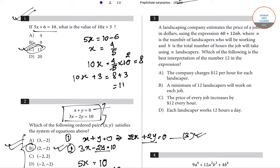Coming to question number 3: a landscaping company estimates the price of a job in dollars using the expression 60 plus 12 × n × h, where n is the number of landscapers who will be working and h is the total number of hours the job will take. Which of the following is the best interpretation of the number 12 in the expression?